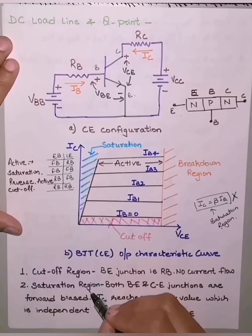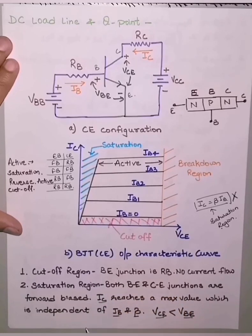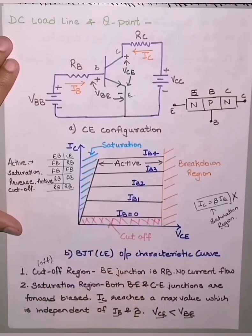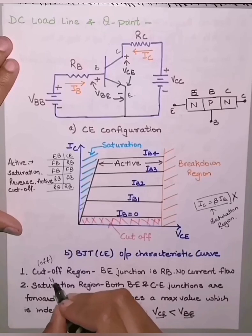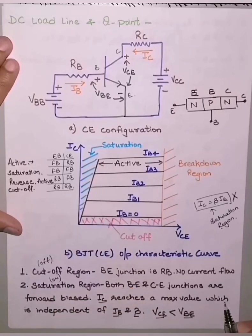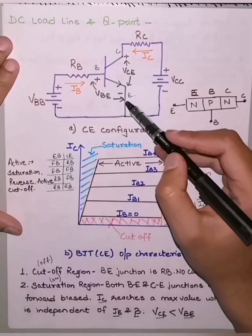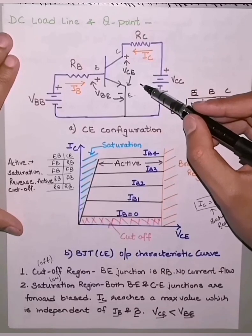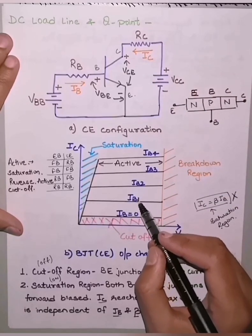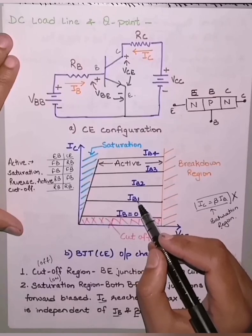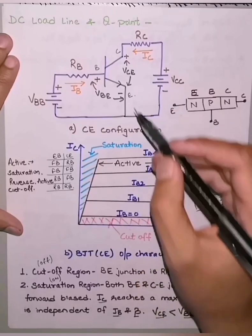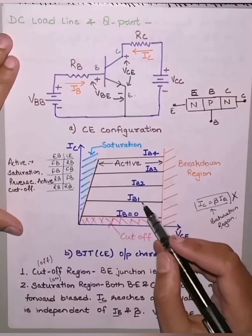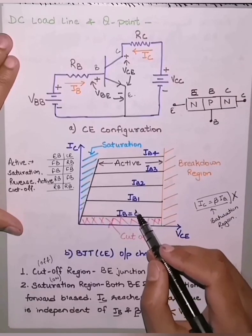The cutoff and saturation regions are used when the transistor is used as a switch. When the transistor is in the cutoff region it is the OFF state, and when in the saturation region it is the ON state. The third important region is the active region, when the base-emitter junction is forward biased and the collector-emitter junction is reverse biased. Here, IC = β·IB is applicable, VBE < VCE < VCC, and amplification takes place in this region.